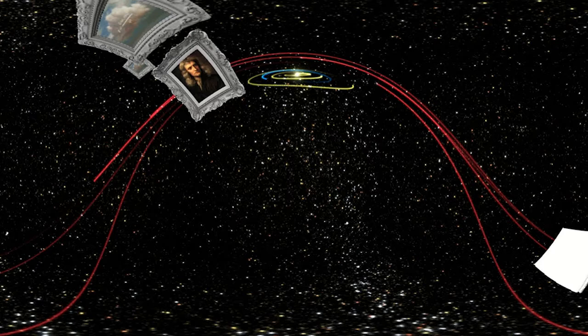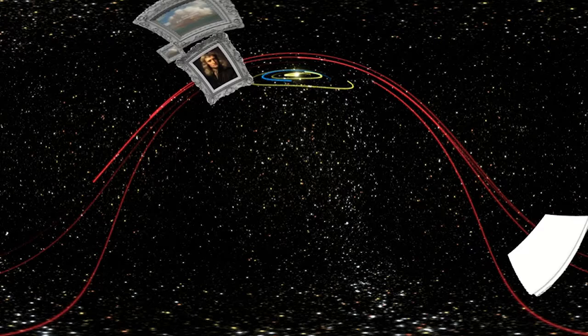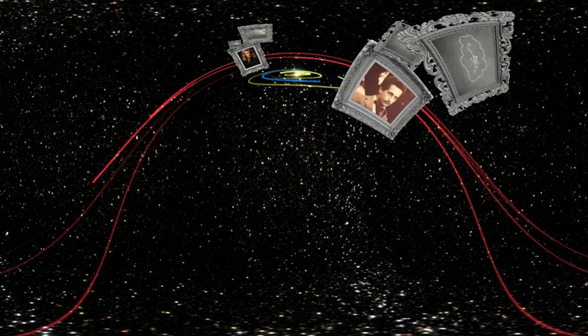Now Newton really struggled with one piece of this himself, and this was the idea of action at a distance. The question he asked was, how does the planet know about the moon, and how does the moon know about the planet? How do they influence each other when they're not touching?